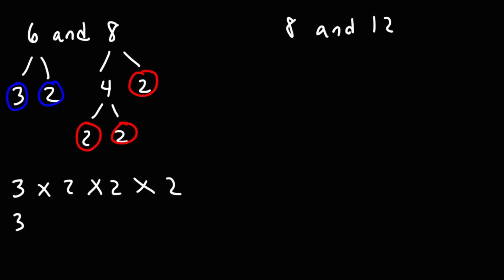2 times 2 times 2 is 8, and 3 times 8 is 24. So 24 is going to be the LCM — the least common multiple of 6 and 8.